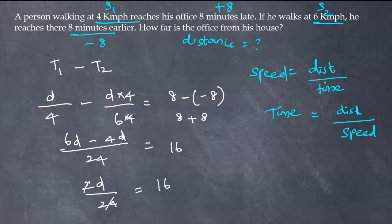So 2 cancels, 12 times. And also since this is in minutes, we have to convert this into hours, so 16 divided by 60. Now this 12 goes to this side, which is D equals 16 by 60 into 12.